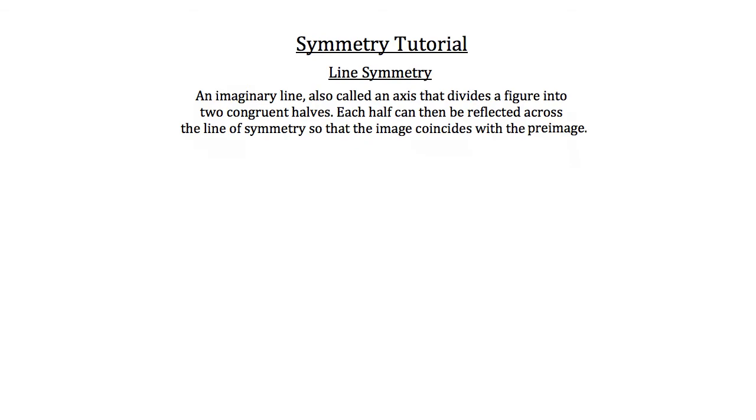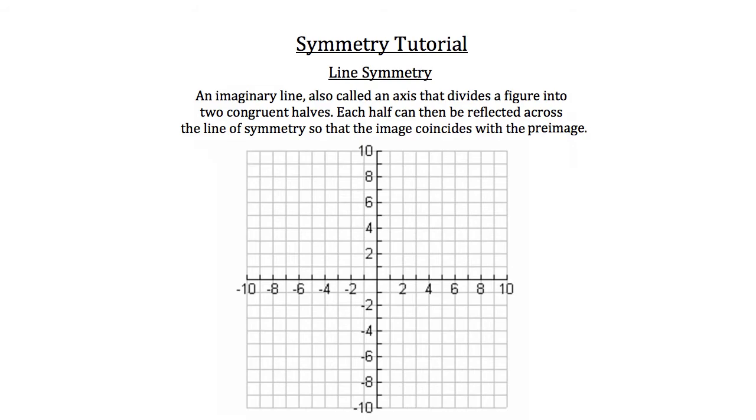Let me show you an example of that. Here's our graph, and here's our image. This image looks kind of like an hourglass. Could you draw an imaginary line somewhere that would divide this figure into two congruent halves so that each one could be reflected across the line of symmetry so that its image would coincide with the preimage? Well, let's take a look at a couple lines that you might be able to draw. Let's first draw a line vertically down the center of this image.